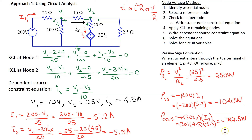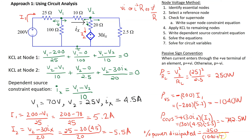The power value is negative for both sources, meaning both sources are generating power in this circuit. The total power generated is the sum: −1040 + (−742.5) = −1782.5 watts. The percentage power dissipated in the load resistor is 250 / (1040 + 742.5) expressed as a percentage, which comes out to 14 percent. So 250 watts are dissipated in the load resistor, and this is 14 percent of the total power generated.